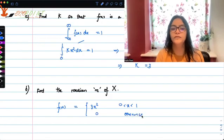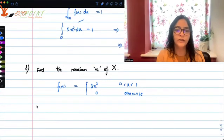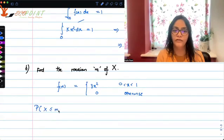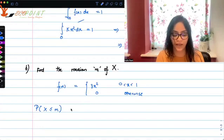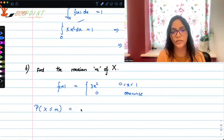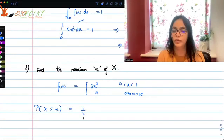And we need to find out the median. So median is that value for which probability x is less than or equal to m is equal to half or 0.5.